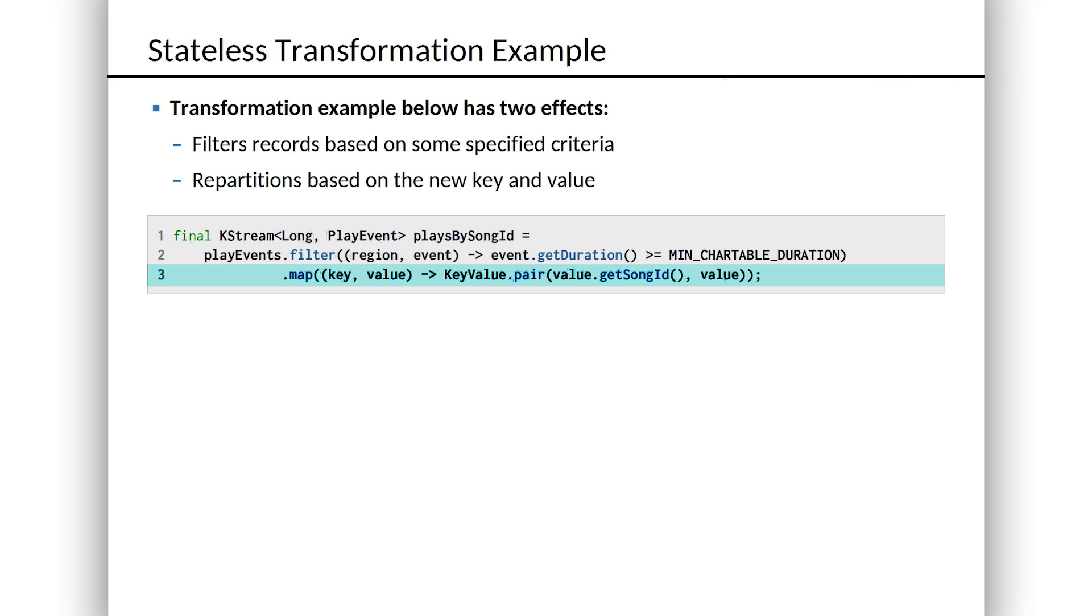Map takes a stream in and creates a new stream performing some arbitrary transformation on the key and the value of each element in the stream. And this shows up in other kinds of computational frameworks, not just stream processing. Map is all over the place. It's certainly a popular thing in functional languages to map over a collection, for example. So it's becoming a pretty common programming paradigm and it shows up in Kafka streams exactly as it should.